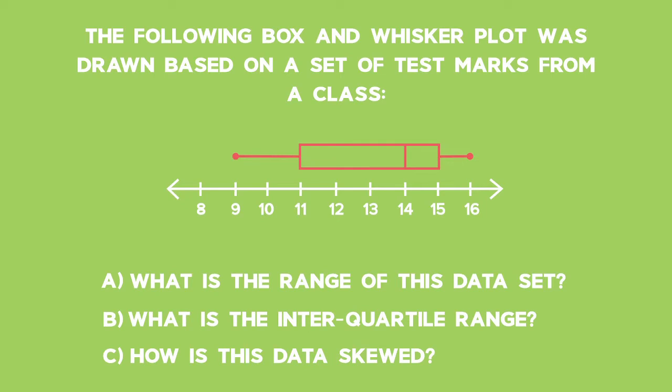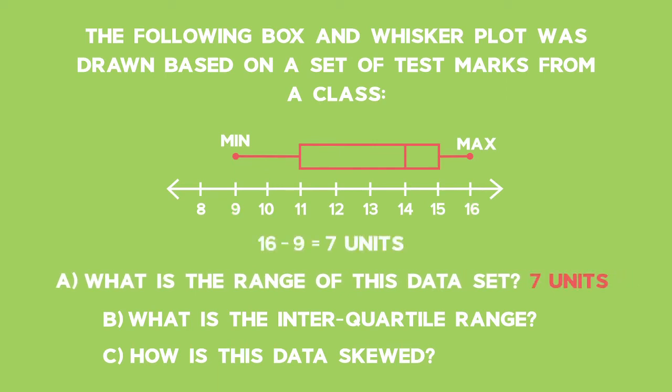Let's start with the range. The range is the difference between the minimum value and the maximum value. Our maximum is 16 and our minimum is 9, which means that our range is 7 units.